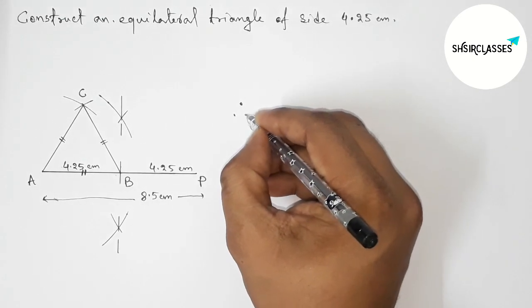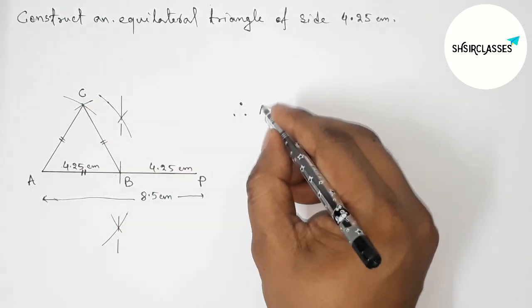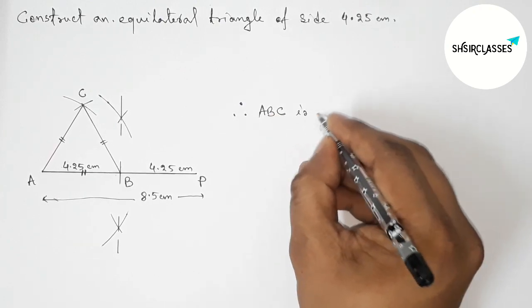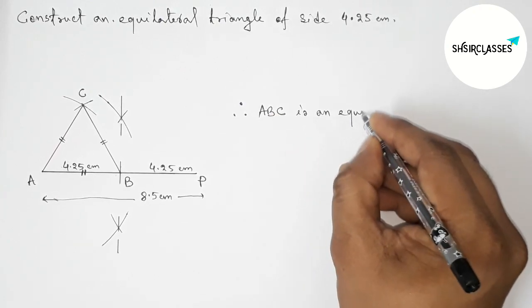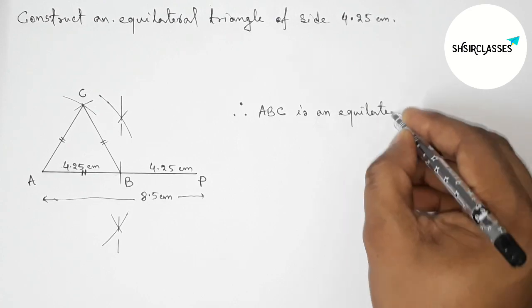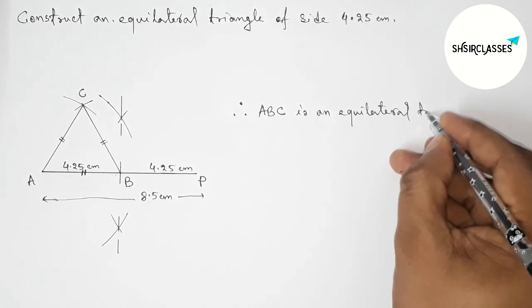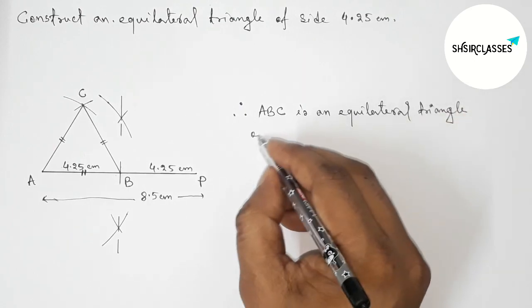Therefore ABC is an equilateral triangle of each side 4.25 centimeter. By this way you can construct this equilateral triangle.